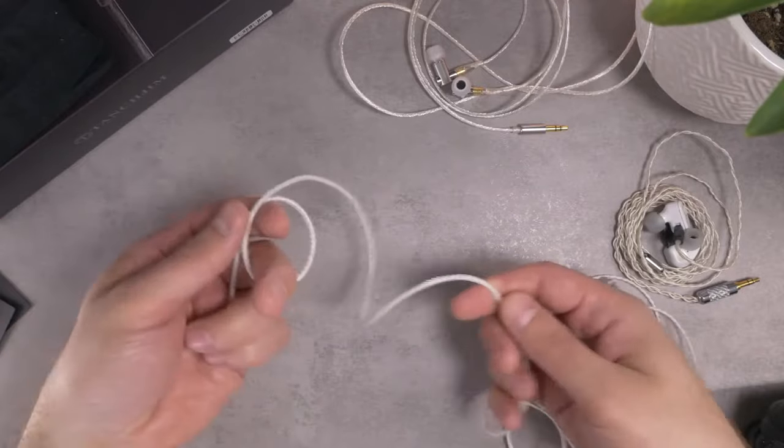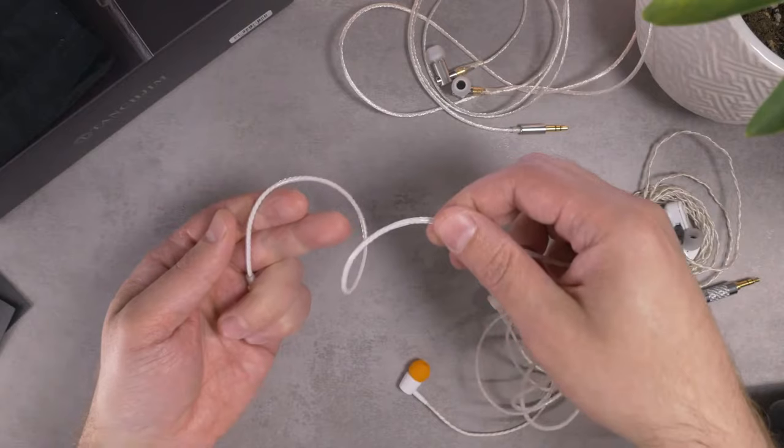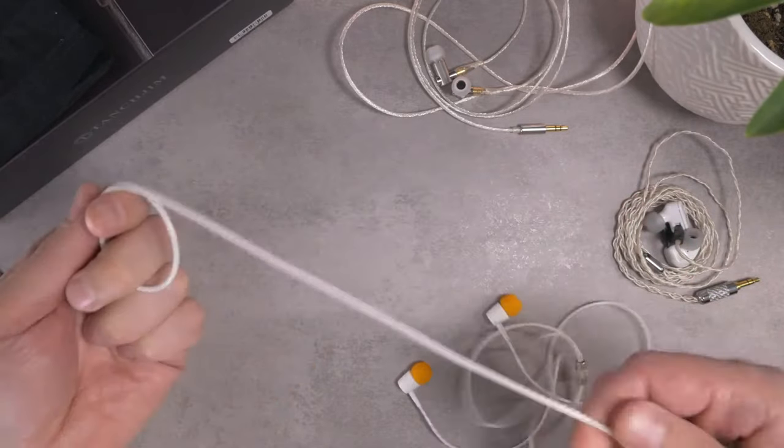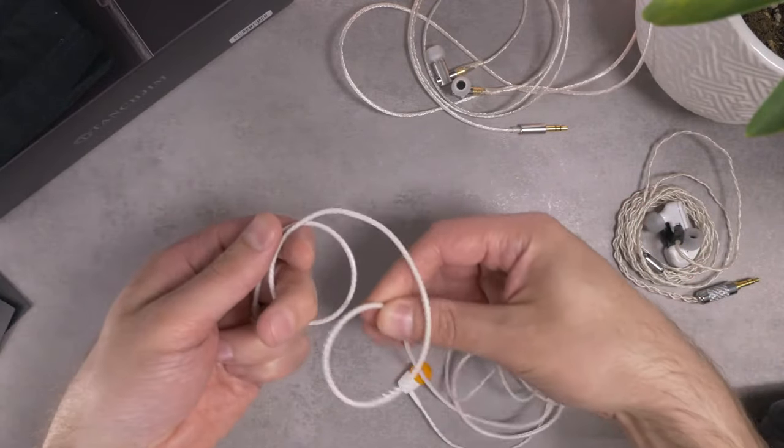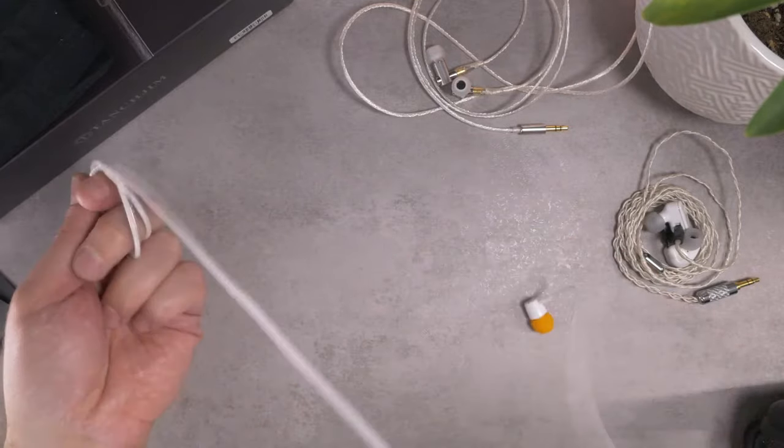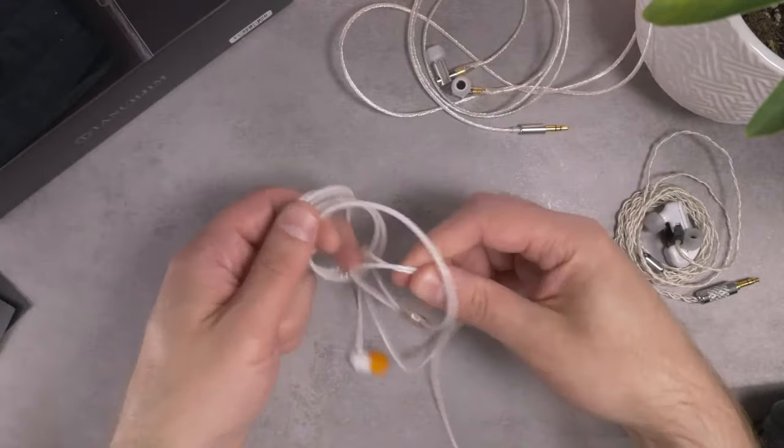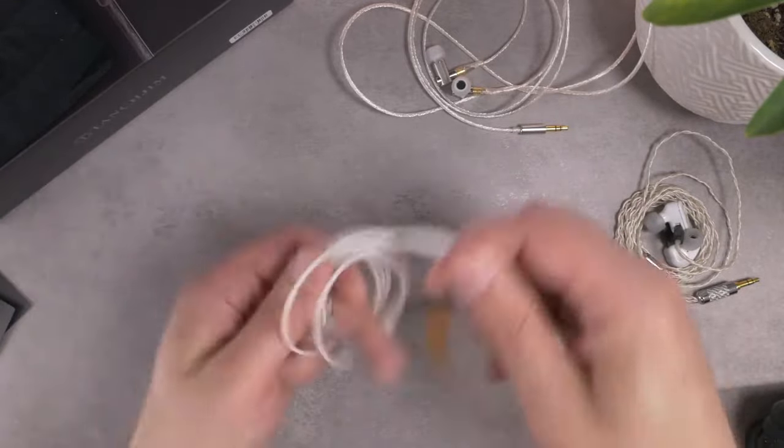The other step here is that you want to alternate your wind. So here I'm winding it over, I'm twisting it over itself and it's winding. Then the next wind I'm going to twist it and it's going to wind under itself. We'll just keep doing that, alternating back and forth, twisting over and under.